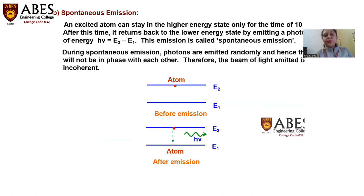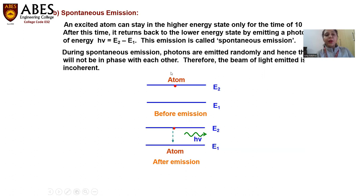Now the atom is already in the excited state. There will be two types of emission. If this atom will again jump to the ground state, it will lead to two types of emission. One of the emissions is spontaneous emission.